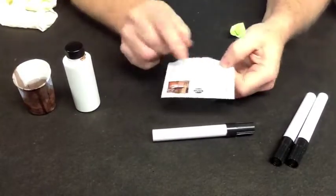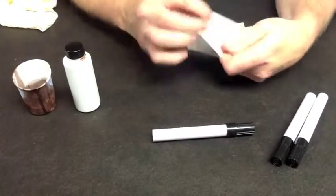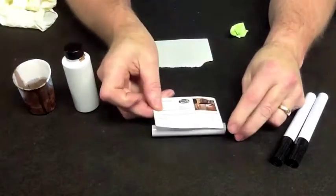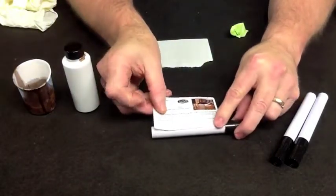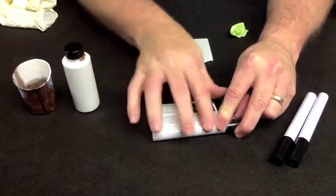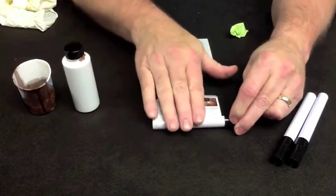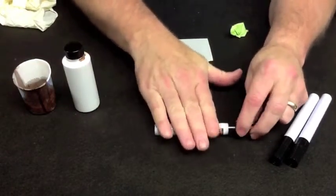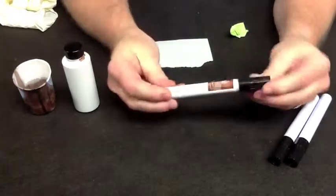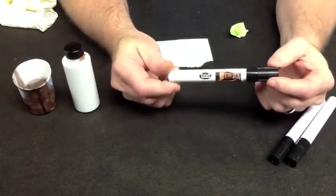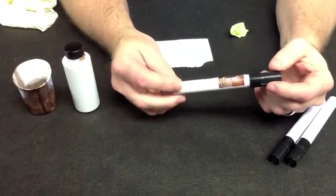We're going to put whatever information we need to on the label. We'll take the label and start at the bottom of the label, that's where the overlap will be. And we can just roll that right around. And now we have a refilled marker.